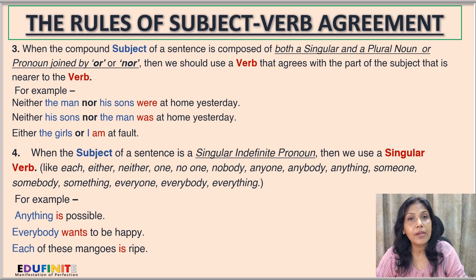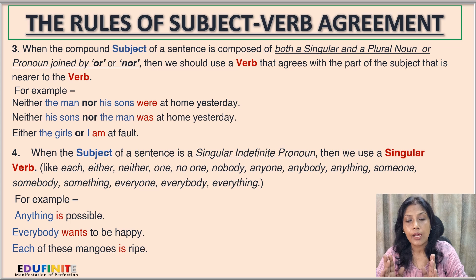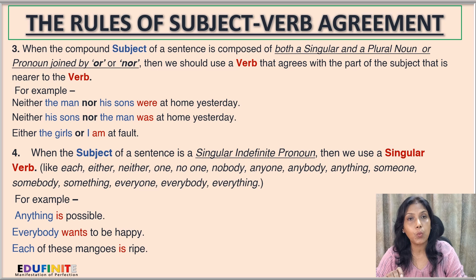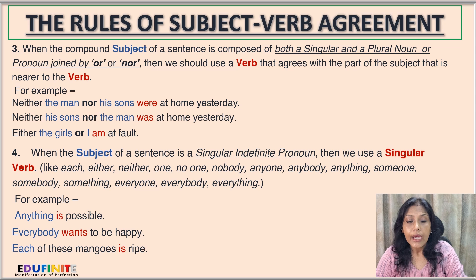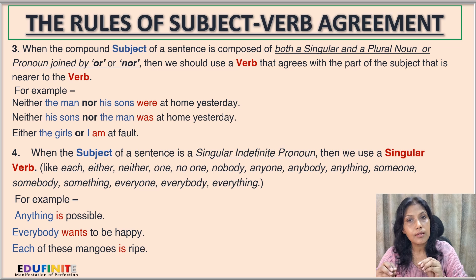More examples of Rule 4: 'Everybody wants to be happy' — after 'everybody' we use 'wants' instead of 'want' because we must use a singular verb. Also: 'Each of these mangoes is ripe' — with 'each' we use the singular verb 'is' and we don't say 'each of the mangoes are ripe'.